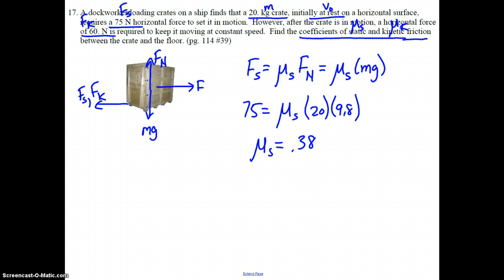Now we're going to calculate the coefficient of kinetic friction. We're going to take the same approach. We start with Fk equals mu_k times Fn. Once again, our normal force is equal to the object's weight, so this becomes mu_k times mg.